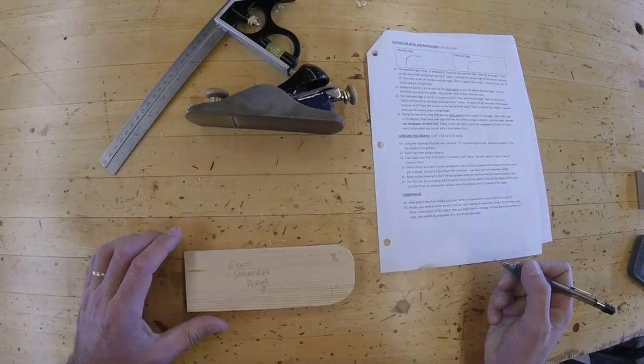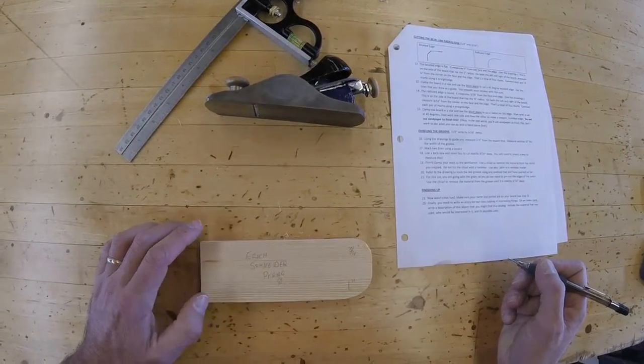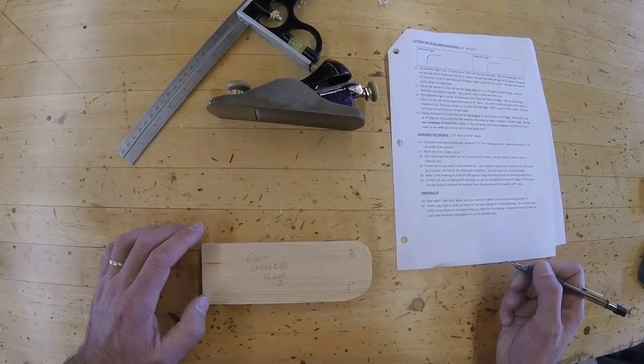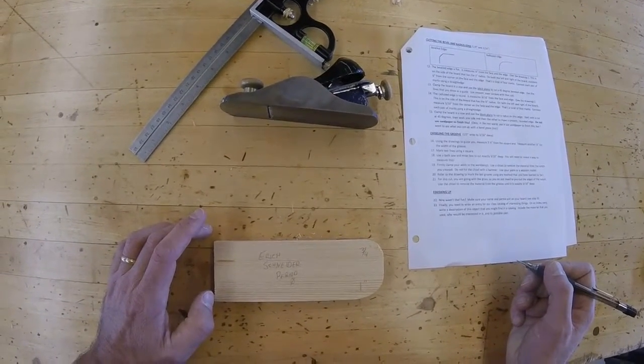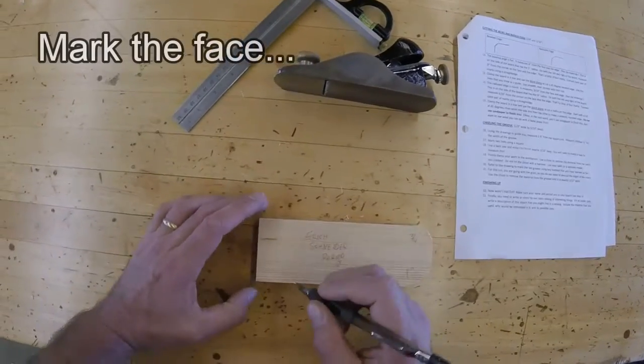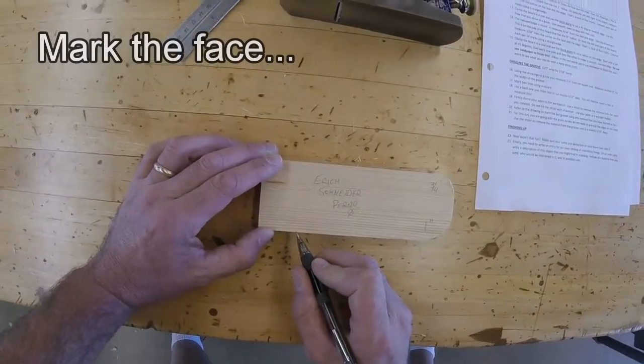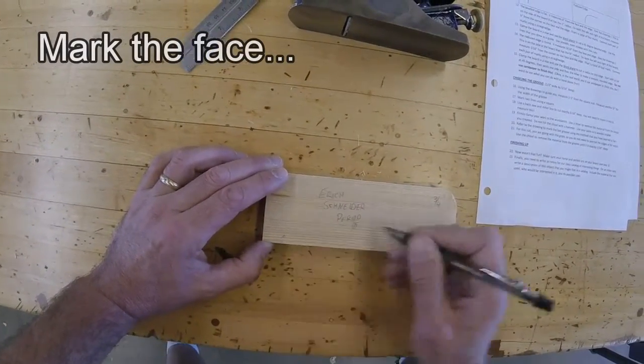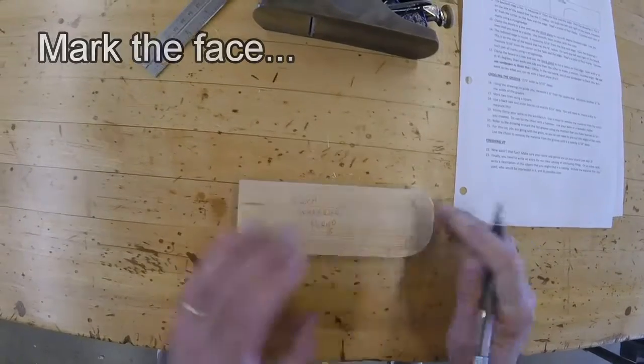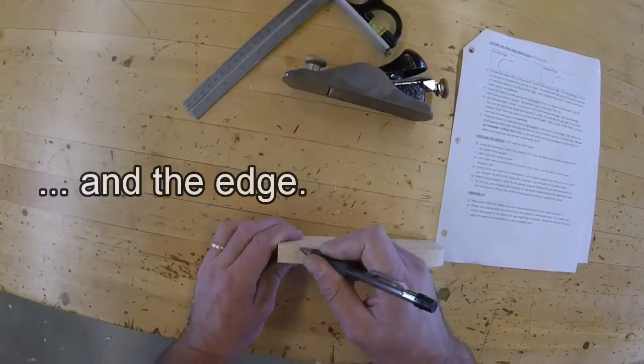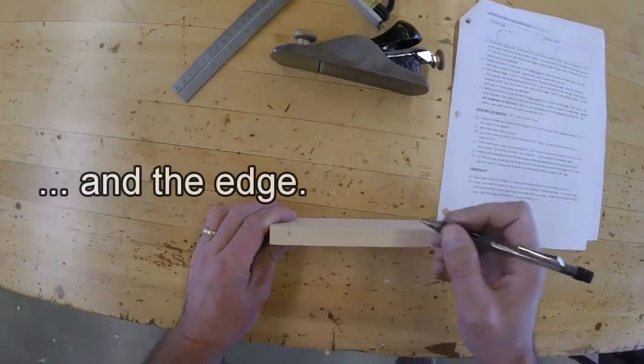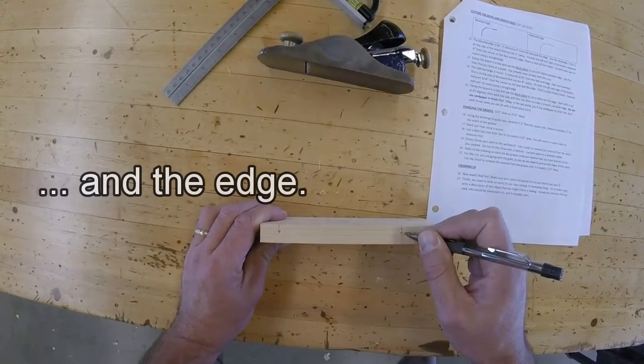On both the left and the right of the board, measure 1 quarter inch from the corner on the face and the edge. That's a total of four marks. Connect each pair of marks using a straight edge. So we want to measure from this corner right here, a quarter inch this way on both sides. We're going to measure down a quarter of an inch from this edge, and down a quarter of an inch from this edge.